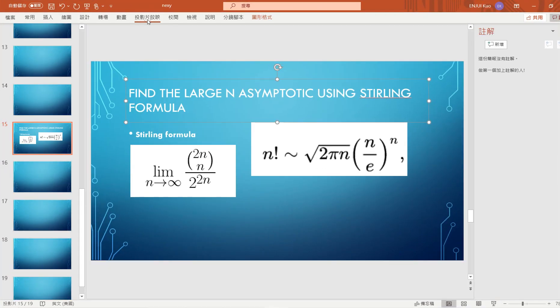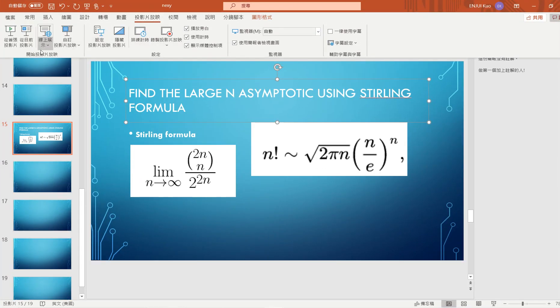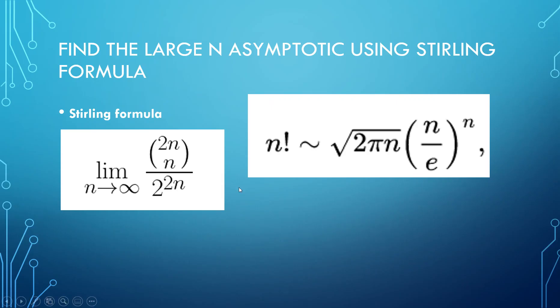This is an important and common question in probability theory. We'll find the large n asymptotic using the Stirling formula. We want to apply Stirling's formula to 2n choose n divided by 2 to the 2n. This is very famous and I've been asked to compute this product many times, so I want to make a video and record this.